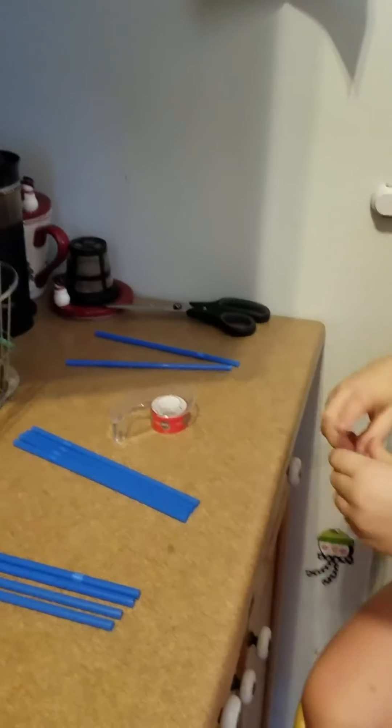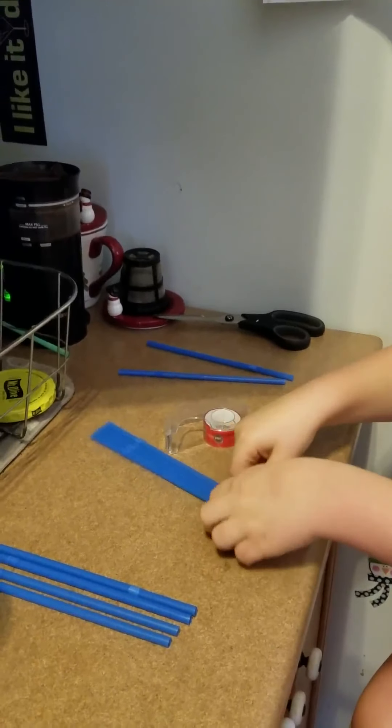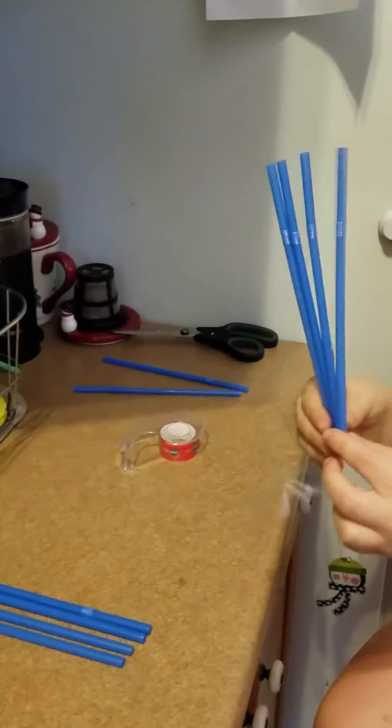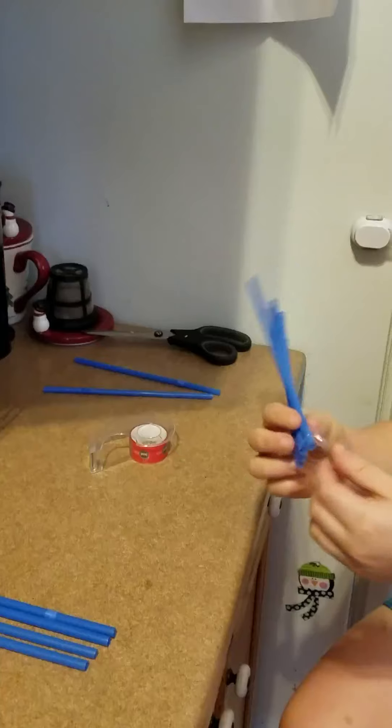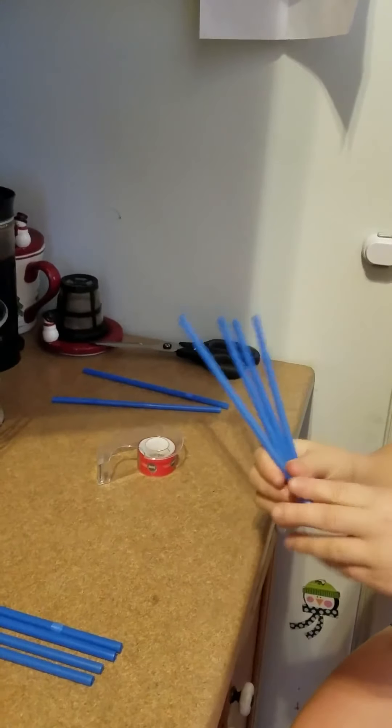We start by just getting four straws, and then putting the tape around this, the bottom part.